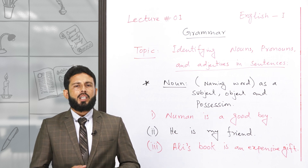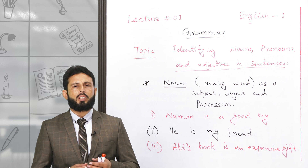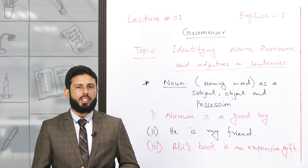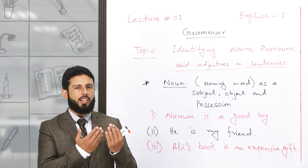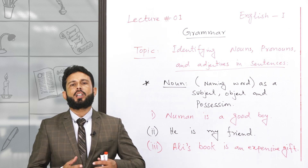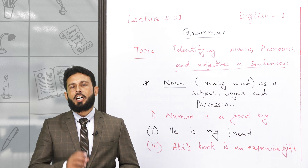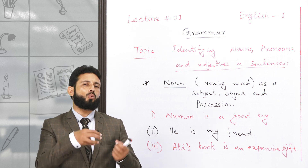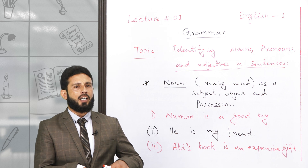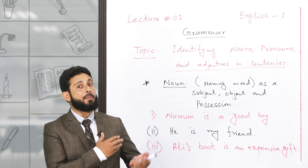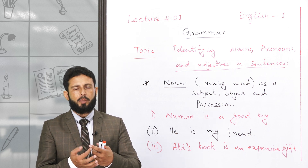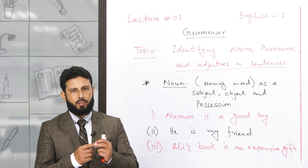You might have heard about different kinds of tests in which you are given words in underlined form and then asked to give them a proper name — which category of parts of speech does it fall in, and what is its sub-category. Categories we call: noun, pronoun, adjective, verb, adverb, preposition, conjunction, interjection.